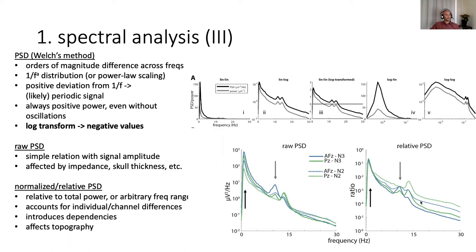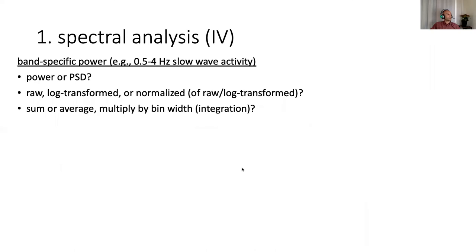And there's different reasons for that, but probably the main one has to do with this 1 over f drop off. Because most of the power is contained in the slow frequency ranges. If you normalize relative to total power, what you're doing, you can see on the right here, you're essentially equalizing power in the slowest frequency bands. But because of that, you now have big differences in beta power between these conditions that you didn't have previously.